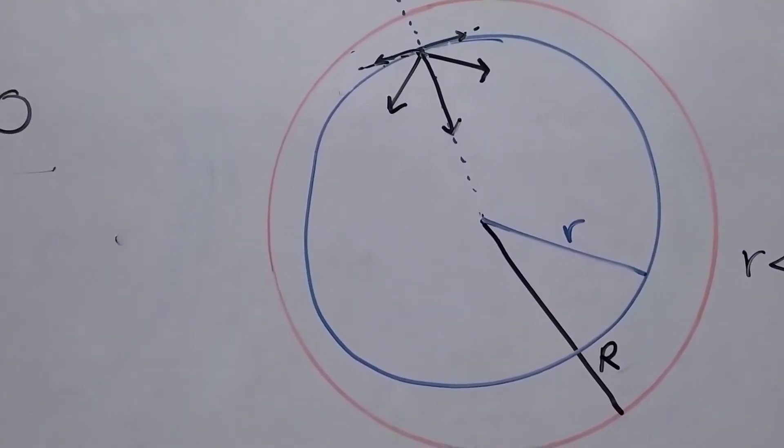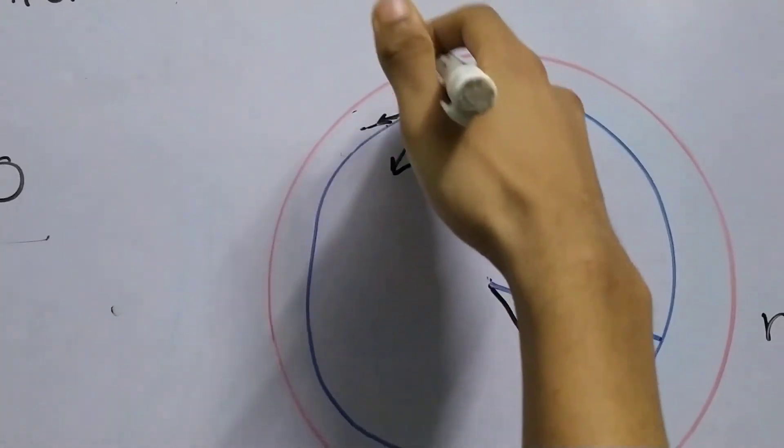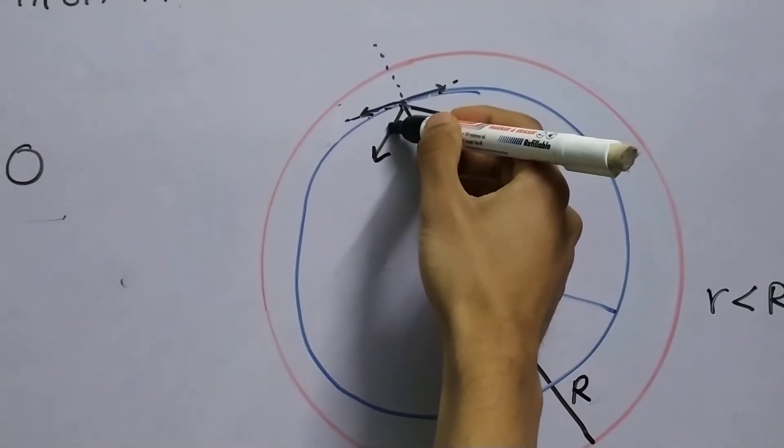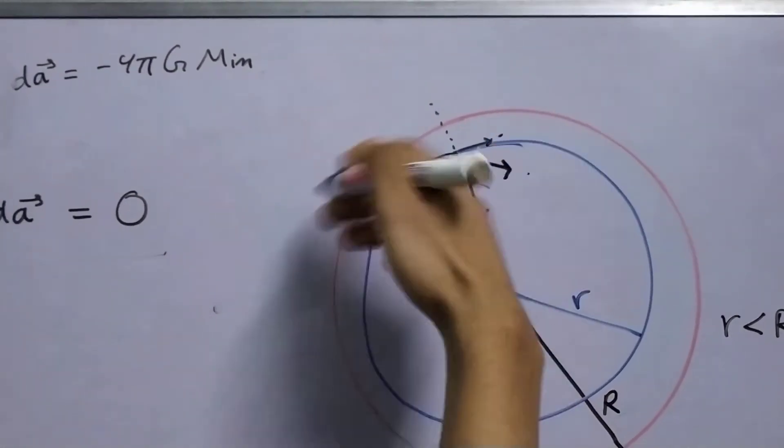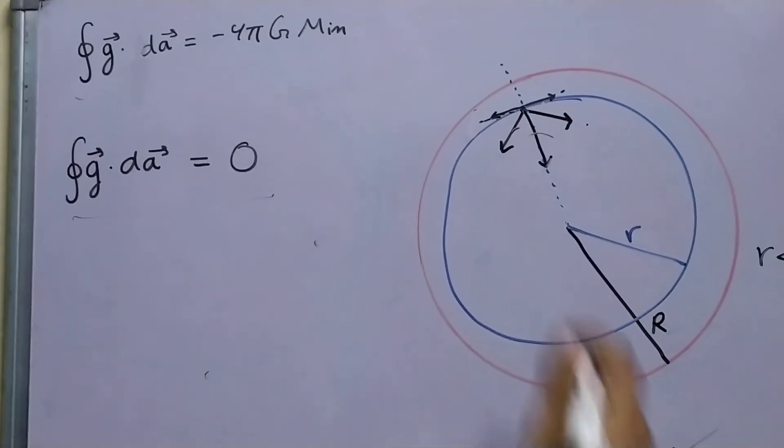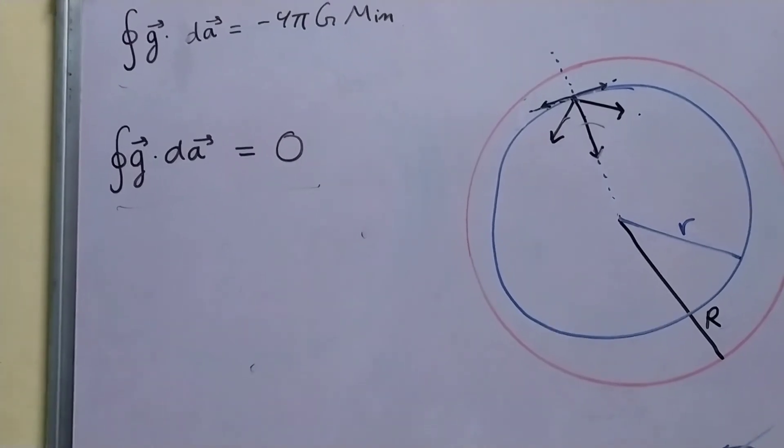This clearly tells us that the field is only radial in direction. If there is a tangential component, there will be tangential component in this direction as well. They will cancel each other out leaving the field along the radius. Now, it can be inward or outward, but it doesn't really matter in this case.